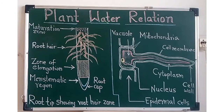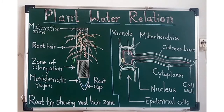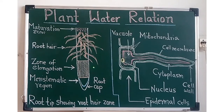Today's topic is water absorbing organs. Land plants absorb water and mineral salts from the soil by their root system. The root is the main organ of water and mineral absorption. There is a continuous path of water from soil through the root, stem, and leaves, and again to soil via the atmosphere.